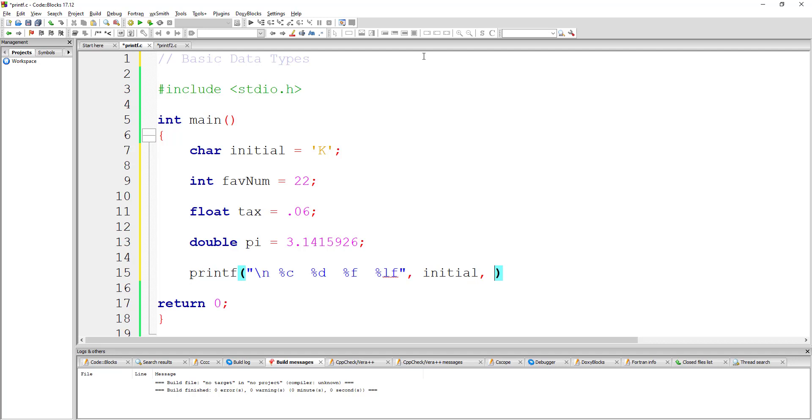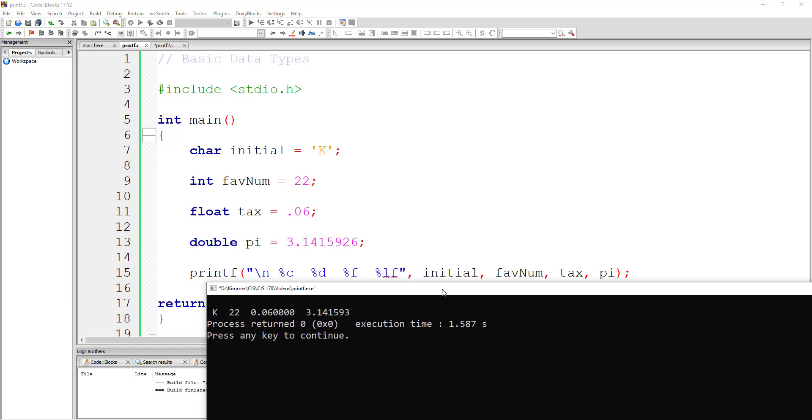Be careful, order matters. And there we go. So, I should be able to save this, and compile, and run it. And like I said, it's all going to print on one line, but at least you'll be able to see it prints the K, the 22, the .06, and because I didn't tell it how many decimal points, it defaults to 6, 3.141593.